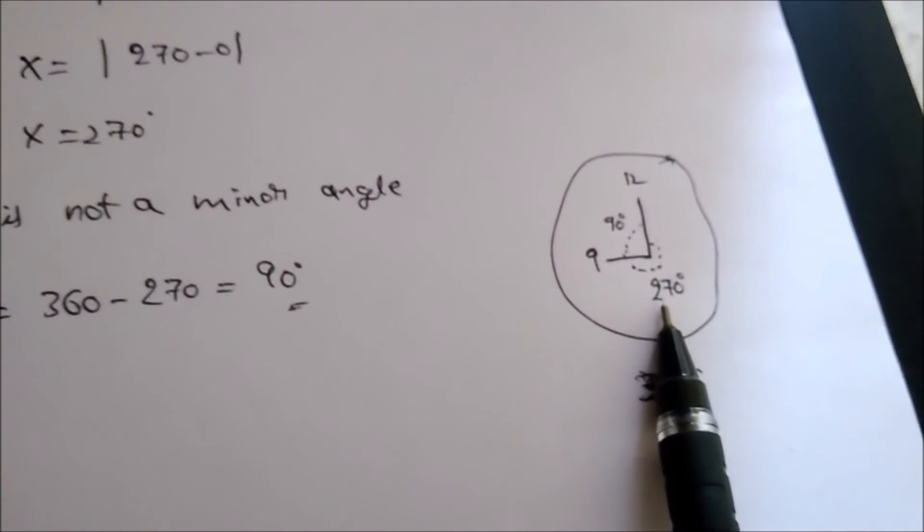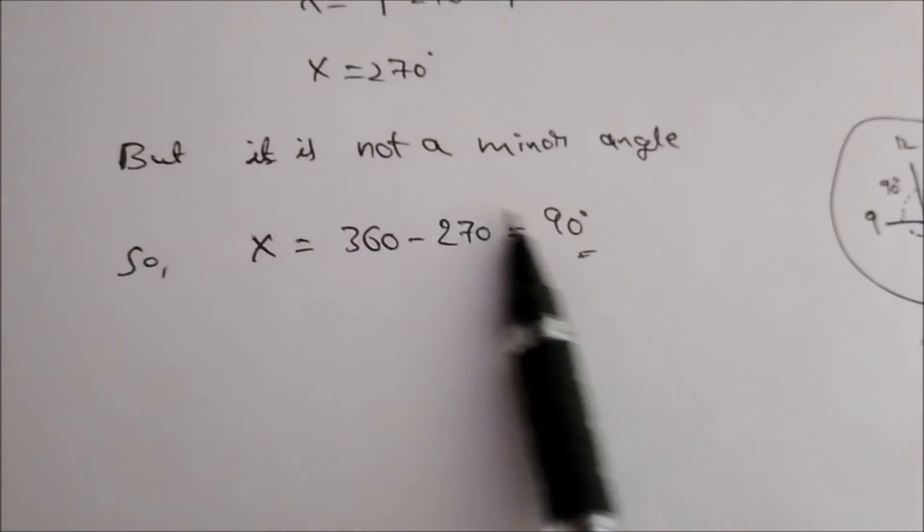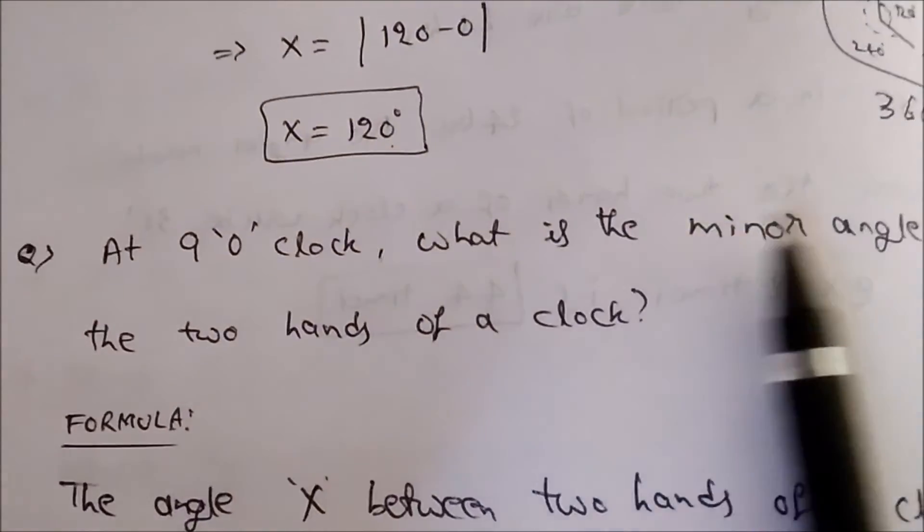So X is 90 degrees here. At 9 o'clock, the minor angle between the two hands of a clock will be 90 degrees.